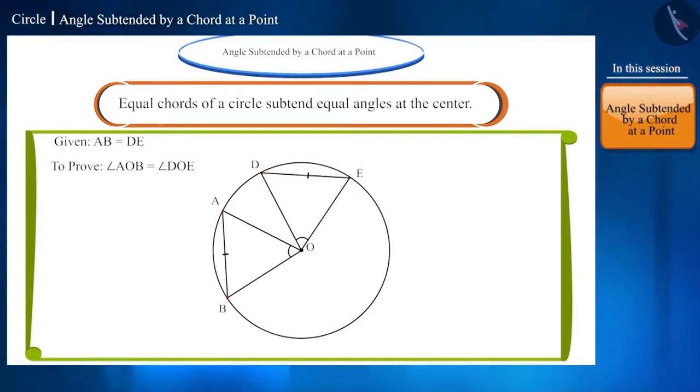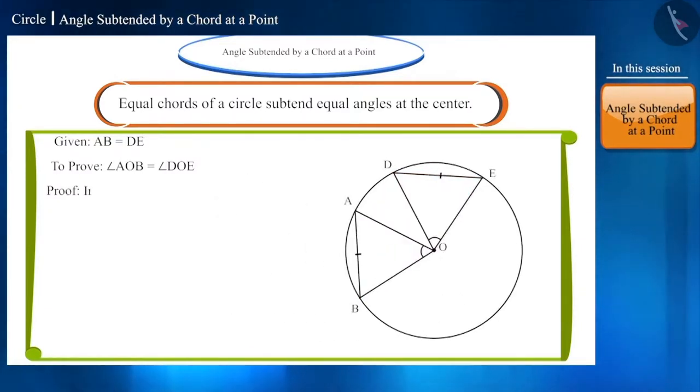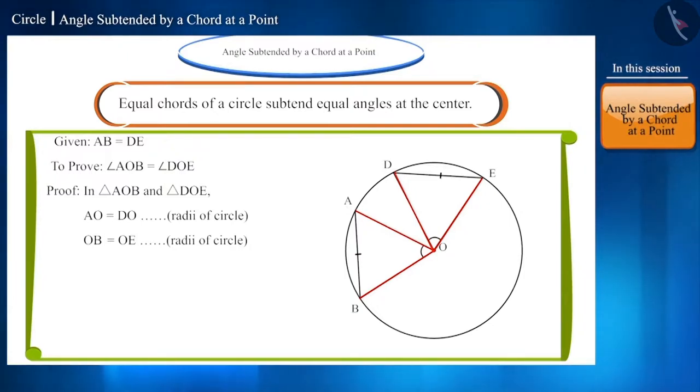If we prove these two triangles to be congruent, then these two angles will also be equal because the corresponding parts of congruent triangles are equal. Friends, look at triangles AOB and DOE. This is an isosceles triangle because their sides are the radii of this circle which are equal and we are given that AB and DE are also equal.